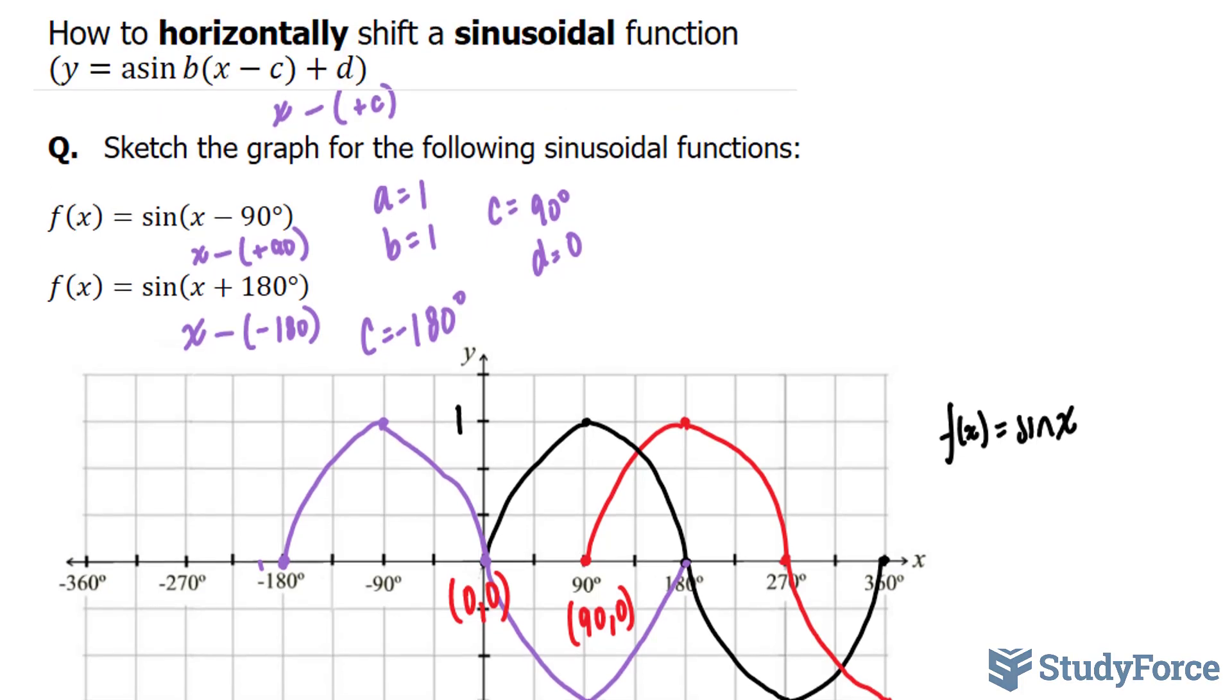The take home message here, if you ever have a sine or even cosine function like you do here, if this part is x minus 90, the wave will move to the right. If it's x plus an angle, then it's going to move to the left. But if you're asked to define your c, you have to define it the way I have. Where in this case, it looks like minus 90, but according to the template, it's plus 90. And this one looks like plus 180, but according to the template, it looks like negative 180. So there you have it. That is how to horizontally shift a sinusoidal function.